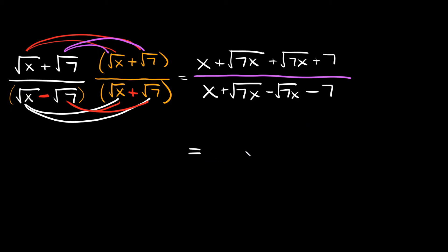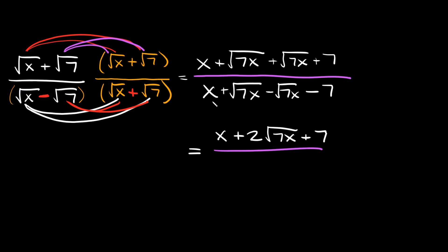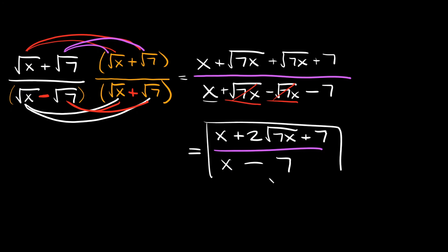Now we simplify. On top: x stays, √(7x) plus √(7x) combines to 2√(7x), plus 7. On the bottom: x stays, positive √(7x) minus √(7x) cancels to zero, leaving x minus 7. So the final answer is x plus 2√(7x) plus 7 over x minus 7.